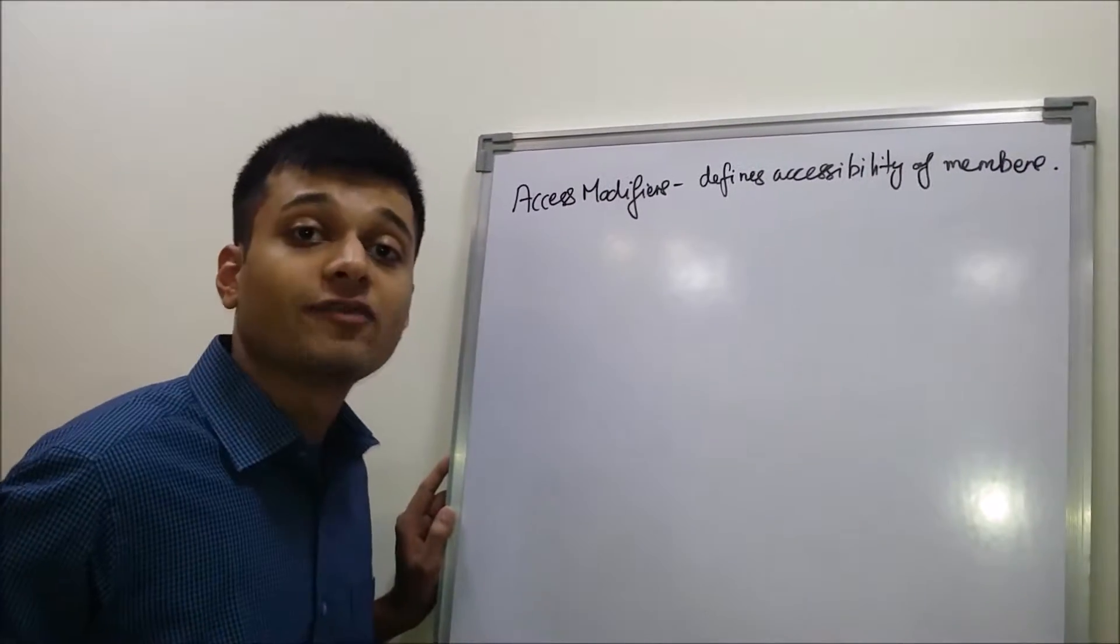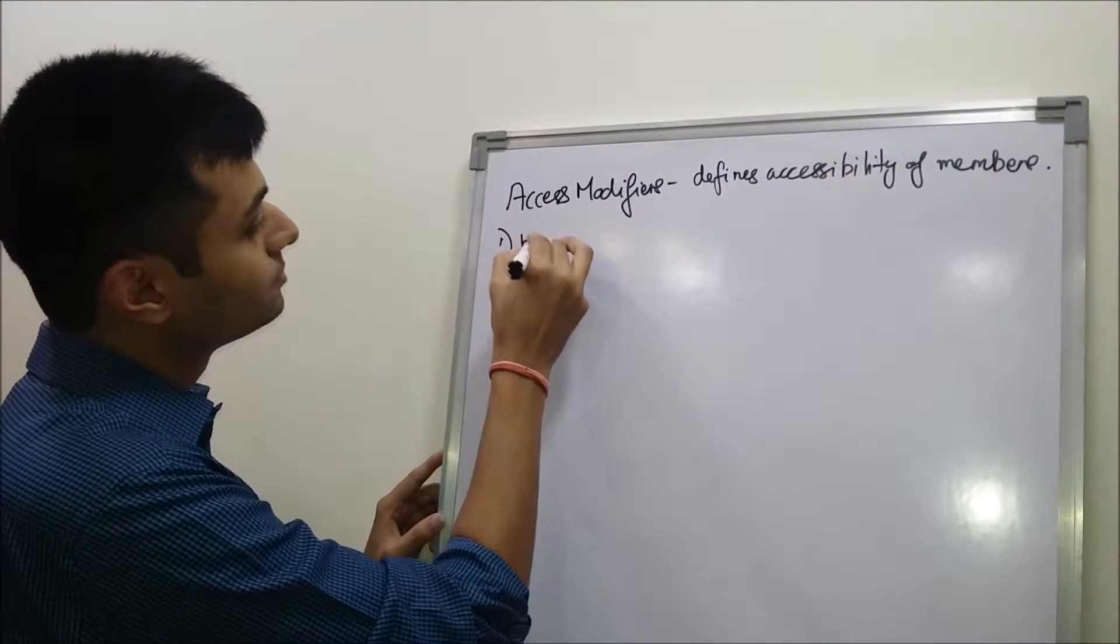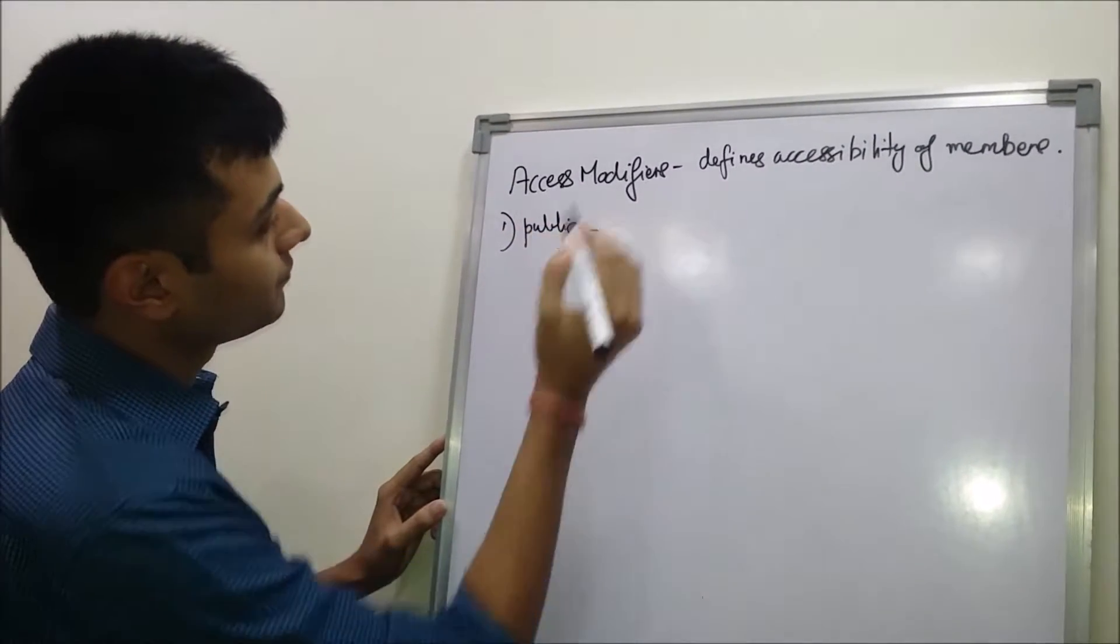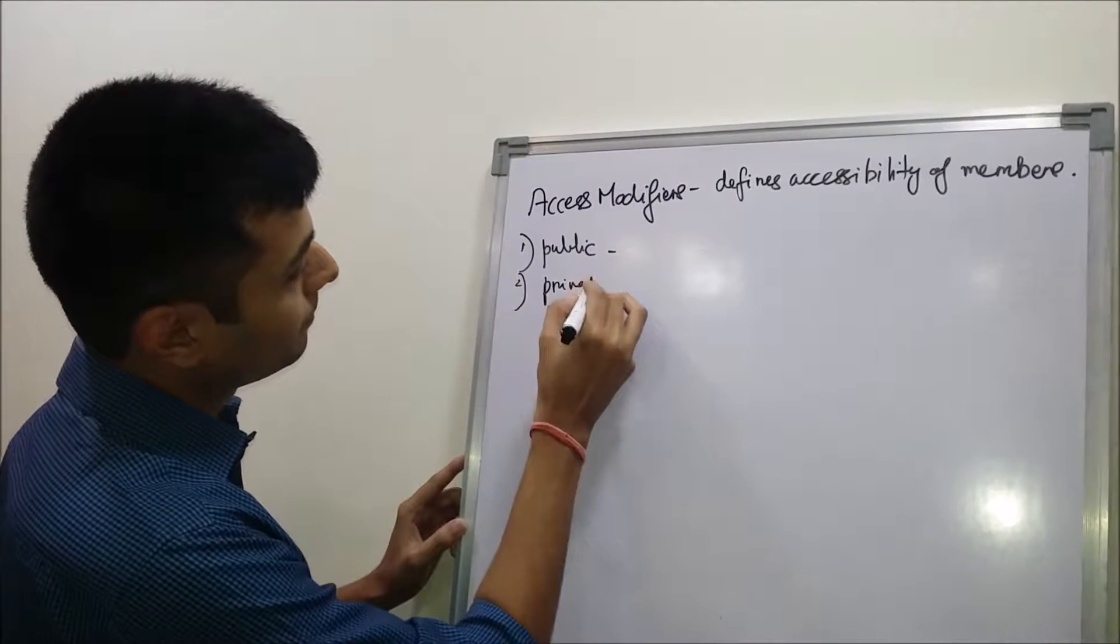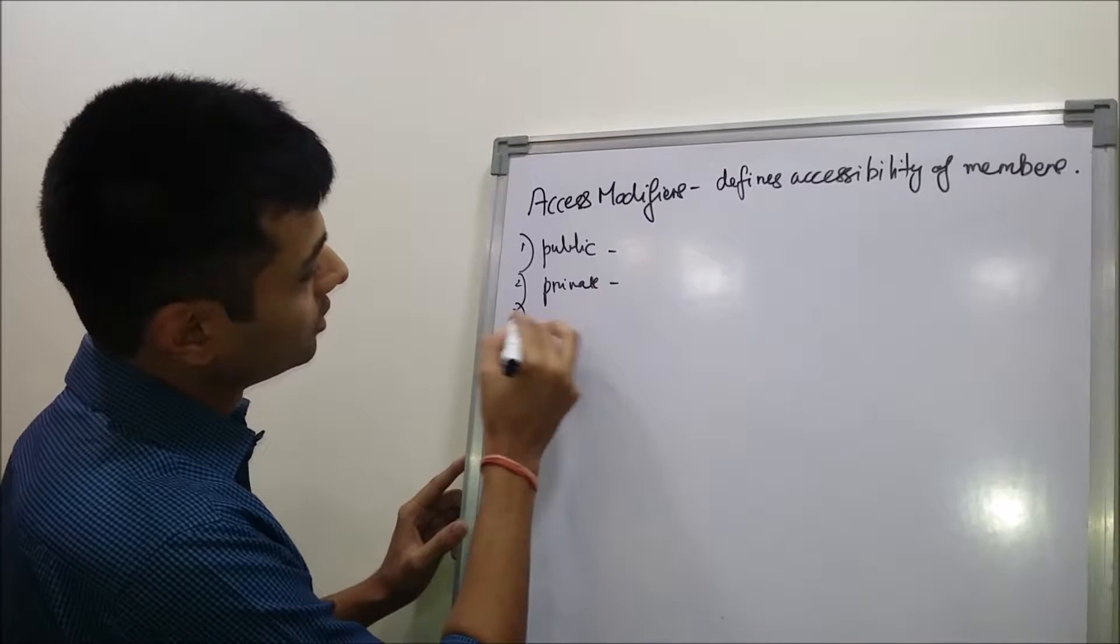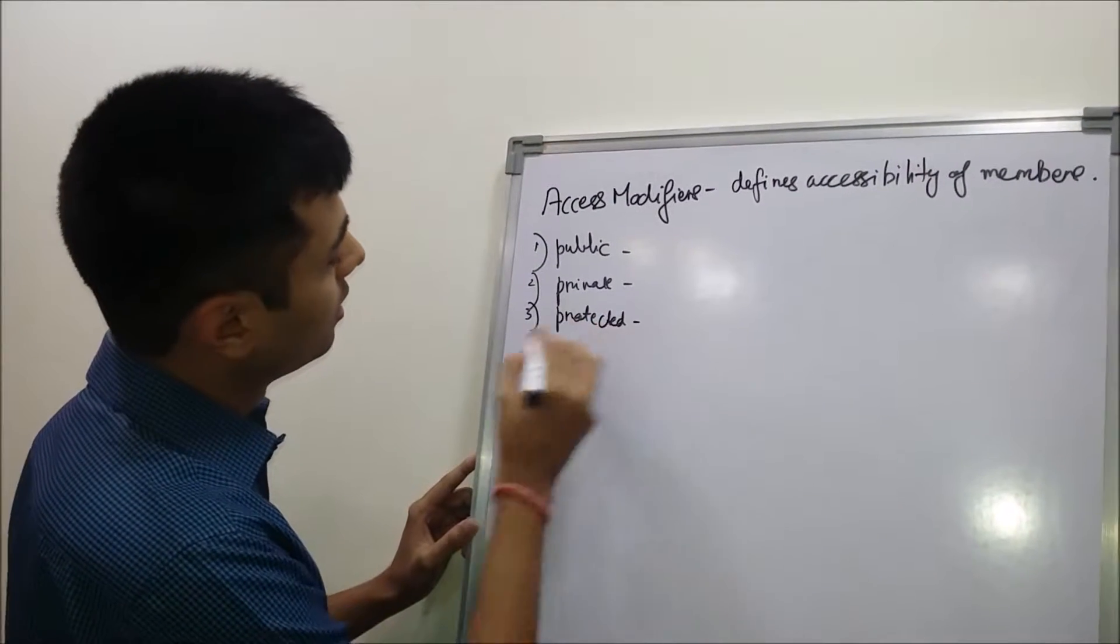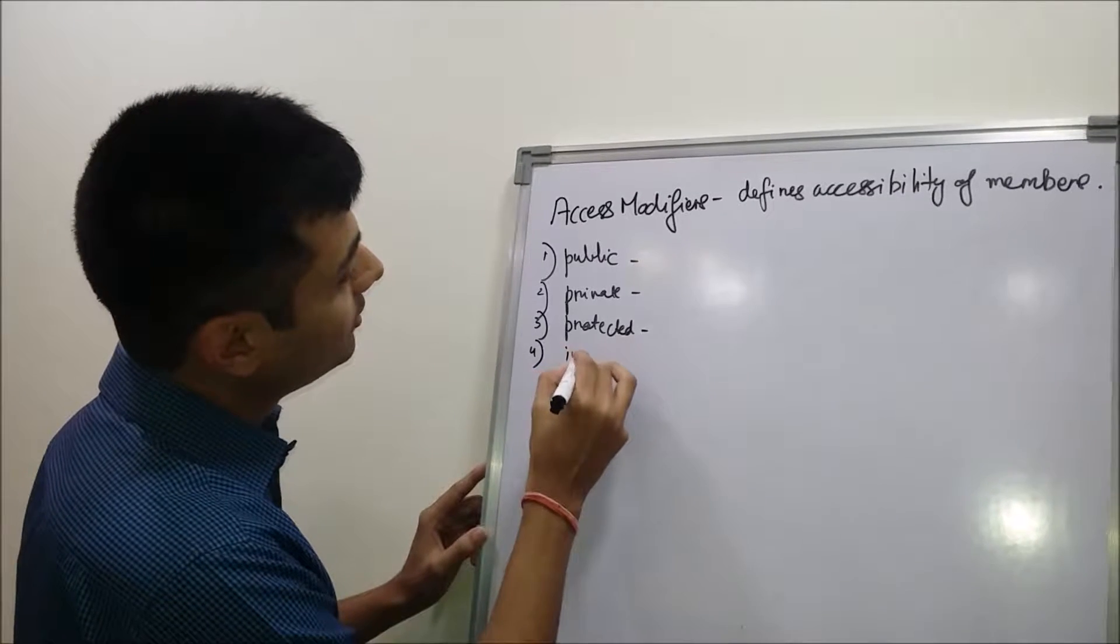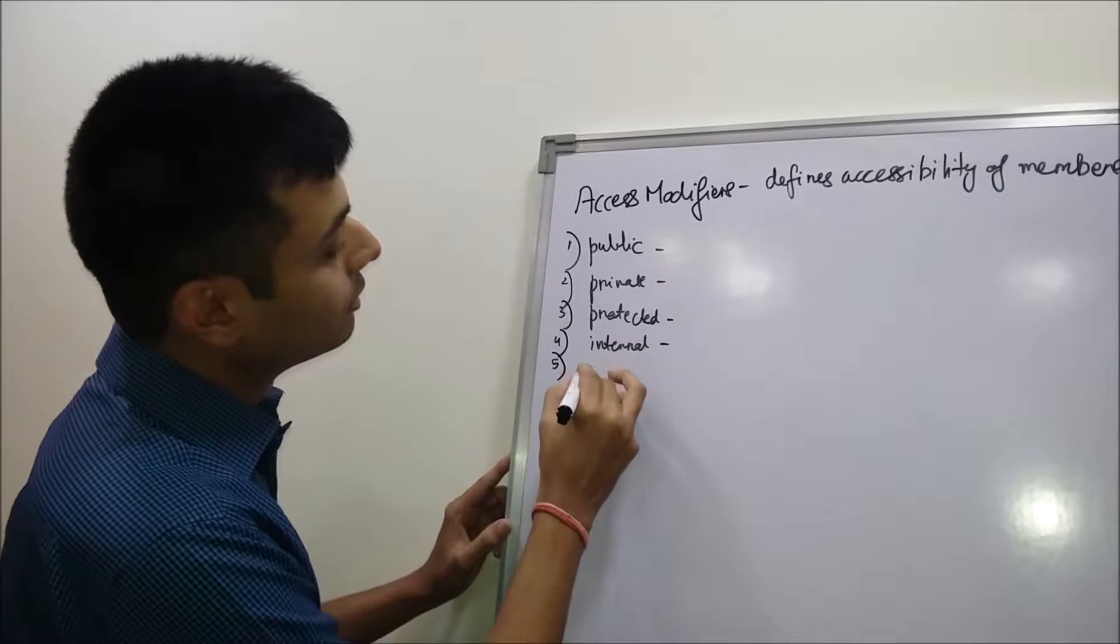There are total five different types of access modifiers. The first one is public. Second is private. Third is protected. Fourth one is internal, and the fifth is protected internal.